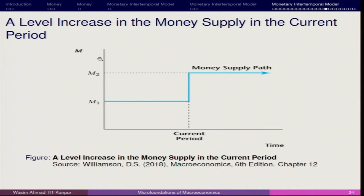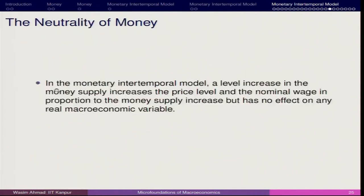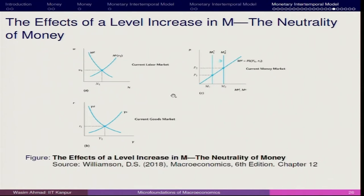A level increase in money supply in the current period looks like this. The neutrality of money states that a level increase in the money supply increases the price level and the nominal wage in proportion to the money supply increase, but has no effect on any real macroeconomic variables. We will try to understand this through the next chart.